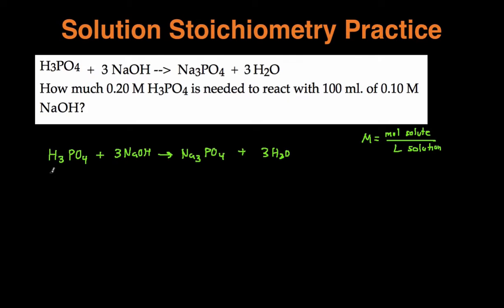And then let's see what is given. So it tells us we have 0.20 molar H3PO4. We have the concentration of this and it's asking how much volume is needed. So that's what we're going to be solving for, question mark volume, or I'll put it down in liters.